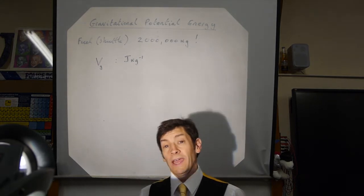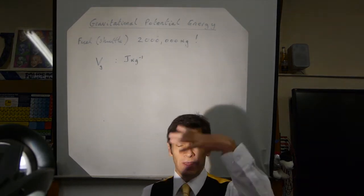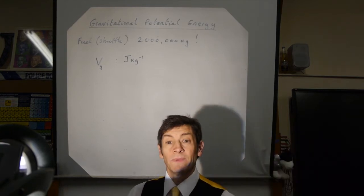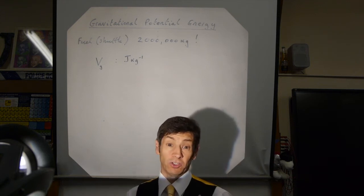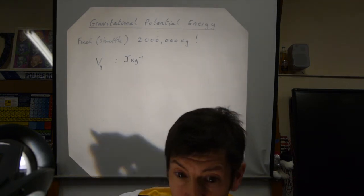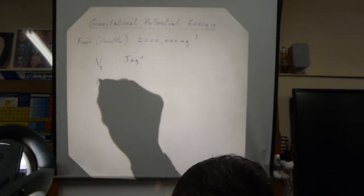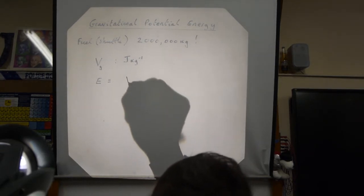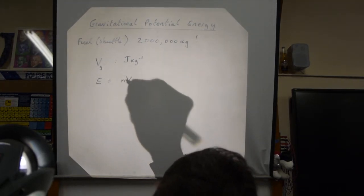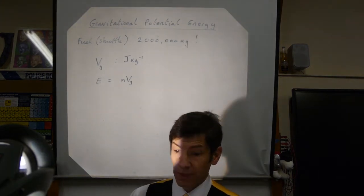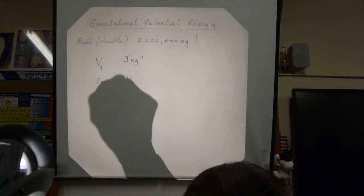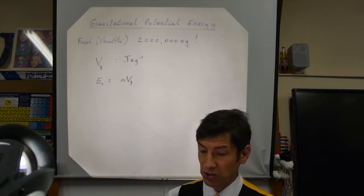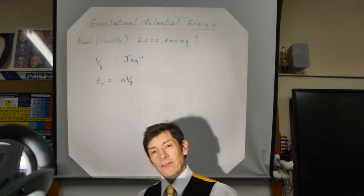If you want to work out how much gravitational potential energy the Space Shuttle has when it's in its orbit, you need to consider the whole mass, not just one kilogram. So the amount of energy — the gravitational potential energy — will be how much per kilogram multiplied by how many kilograms you have: E_p = V_g × m.